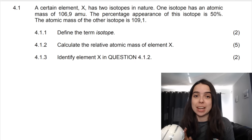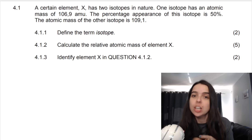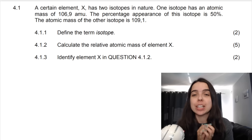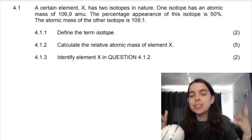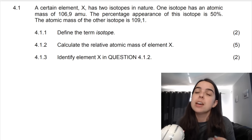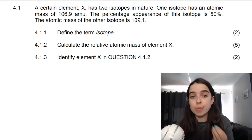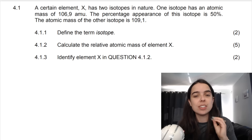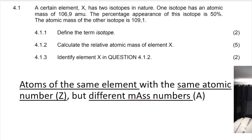Our first question is as follows: a certain element X has two isotopes. Isotope one has an atomic mass of 106.9 amu — the unit is amu — and the percentage abundance of this isotope is 50%. The other isotope has an atomic mass of 109.1. The first part of the question asks you to define the term isotope.